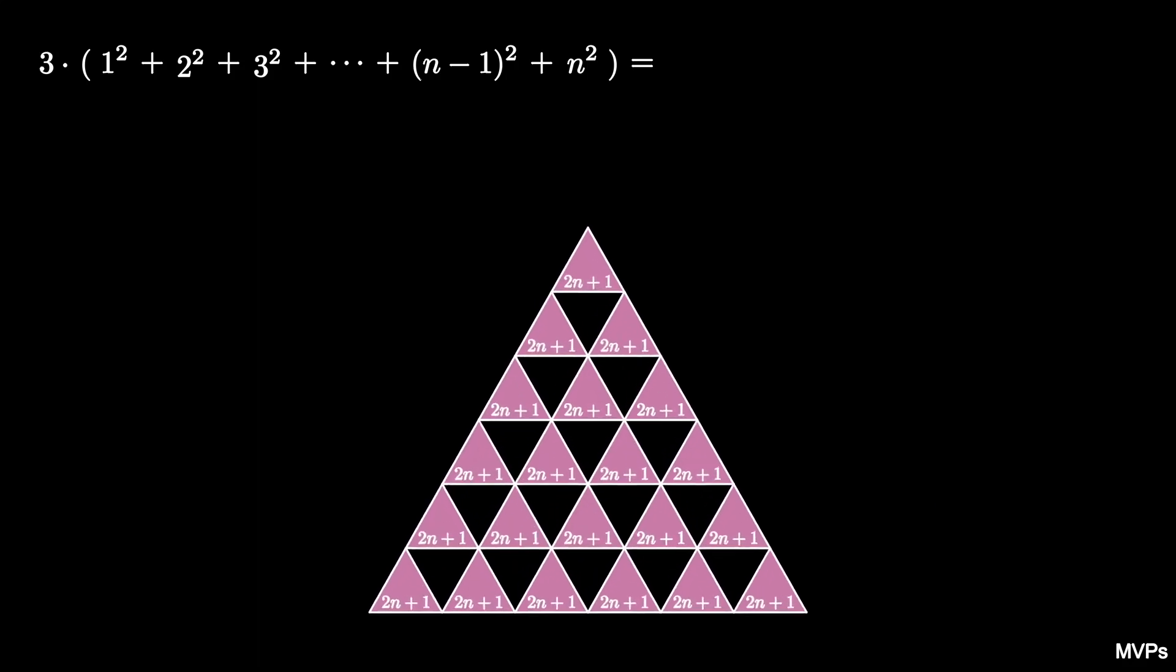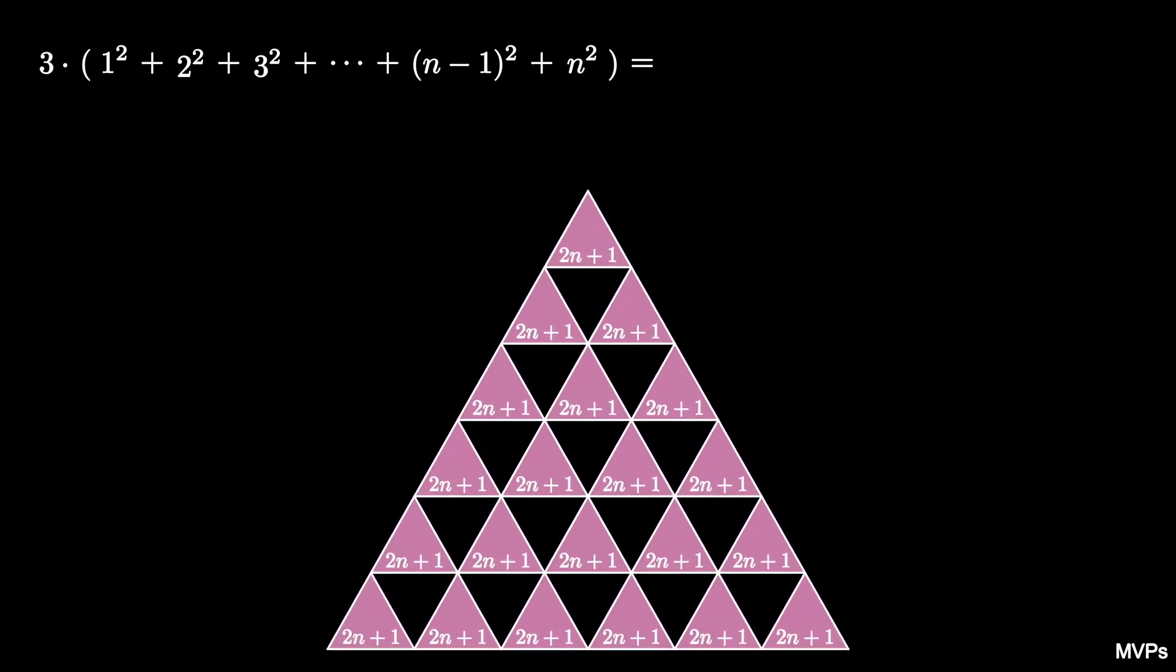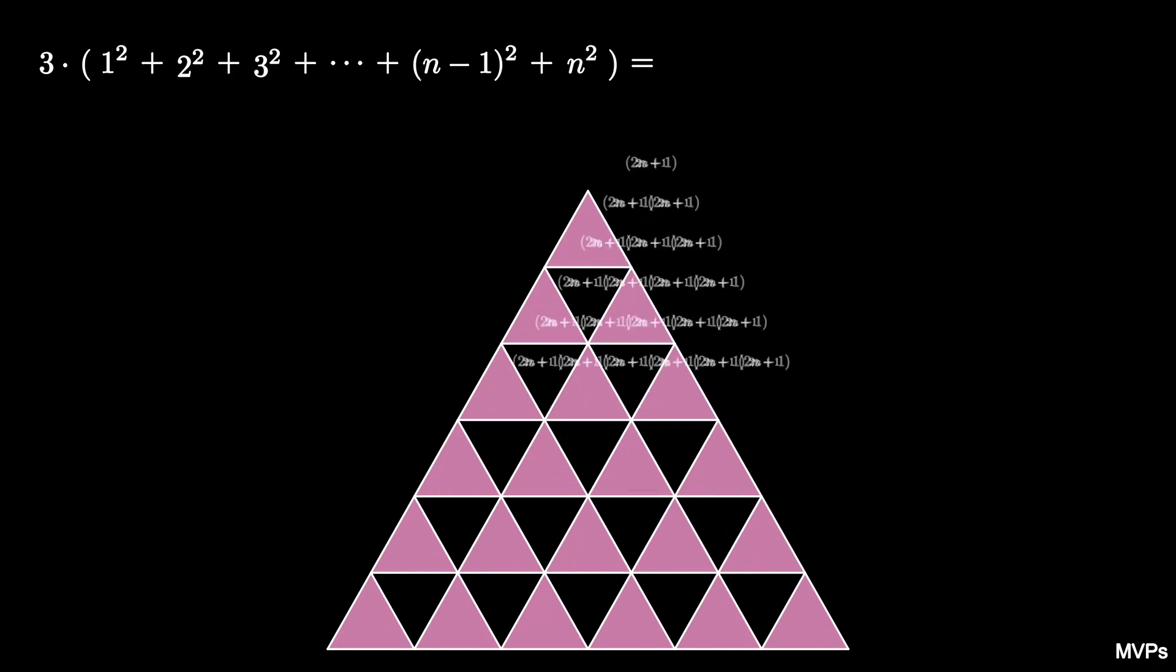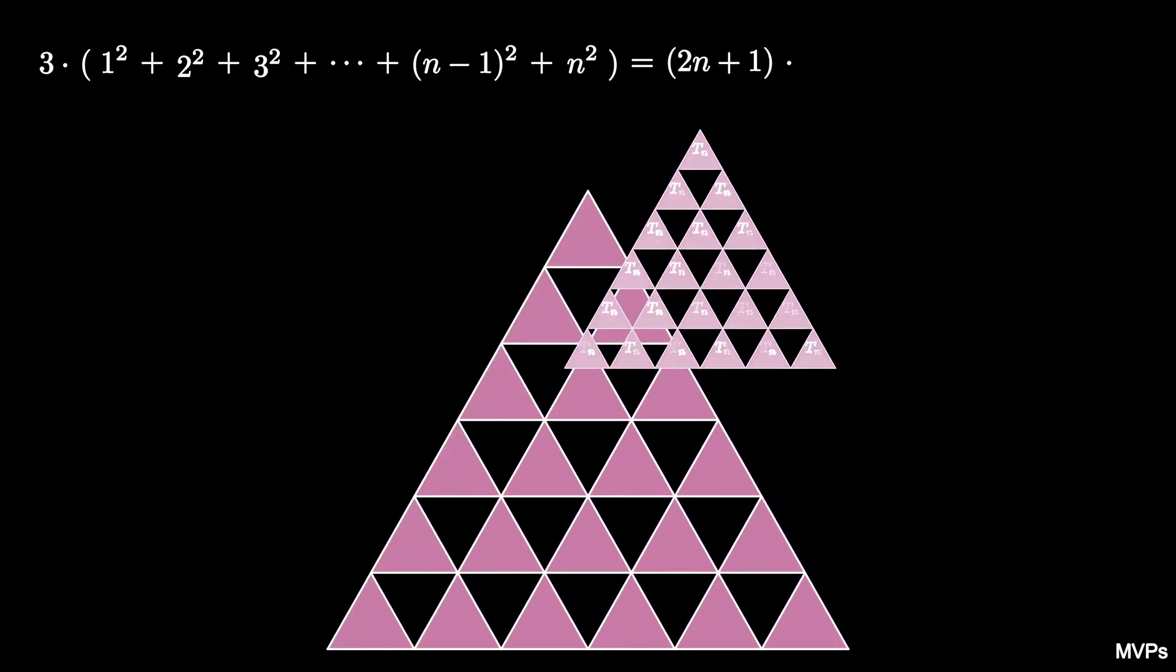Thus when we stack all three copies together, we have a triangular array of stacks of tokens with 2n plus 1 tokens. So the total number of tokens is 2n plus 1 times the nth triangular number.